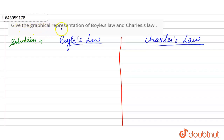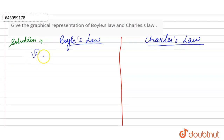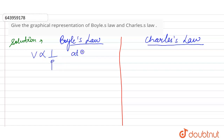Give the graphical representation of Boyle's law and Charles' law. Boyle's law states that volume is directly proportional to 1 by P (pressure) at constant temperature.